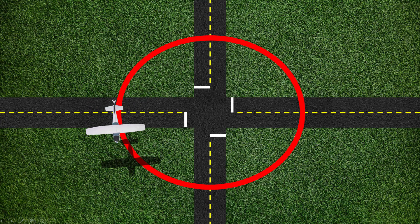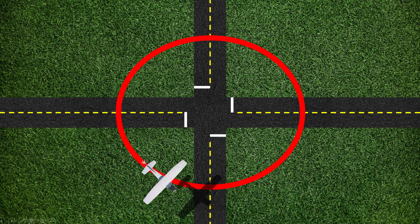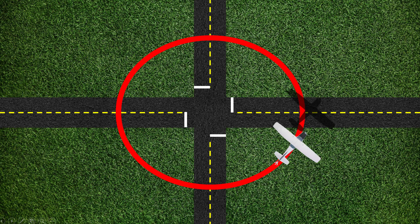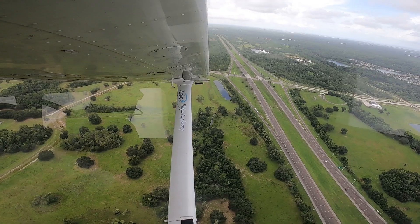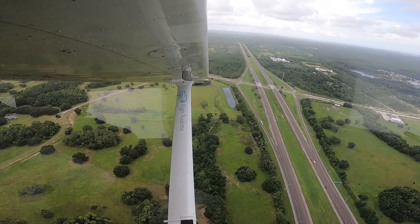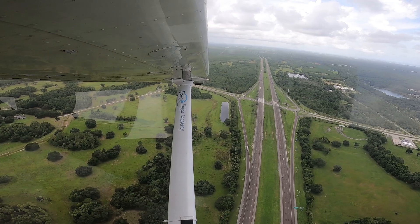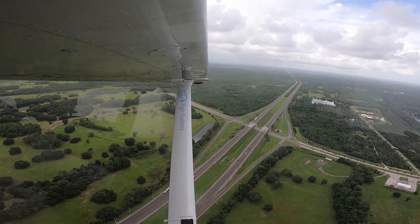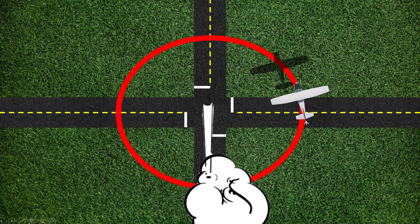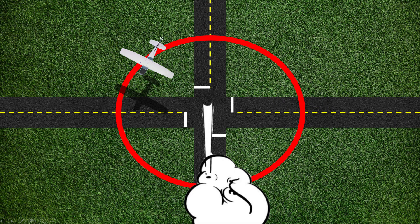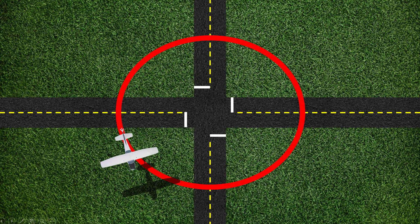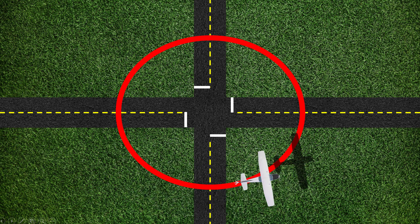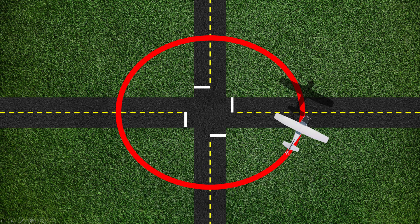The pilot crabs the aircraft's nose to the outside of the turn to properly compensate for the wind. As the second half of the 360-degree turn continues, the bank is slowly increased until reaching the steepest bank as the first 360-degree turn is completed. Complete another 360-degree turn around the same ground reference object, adjusting the bank angle and wind correction angle as necessary to fly over the same ground track as the first turn.